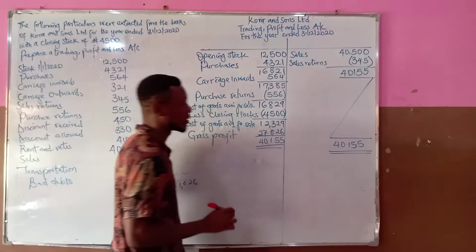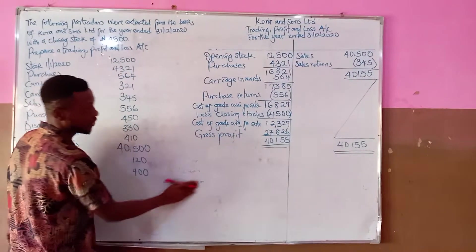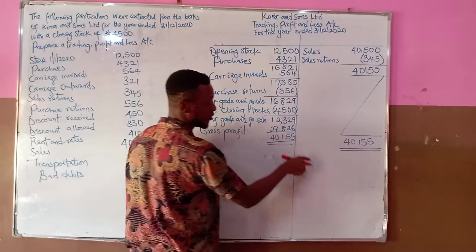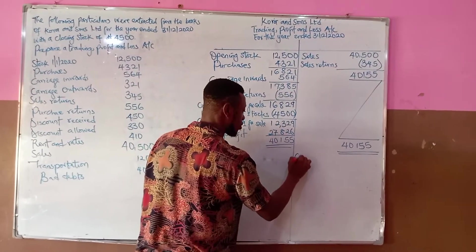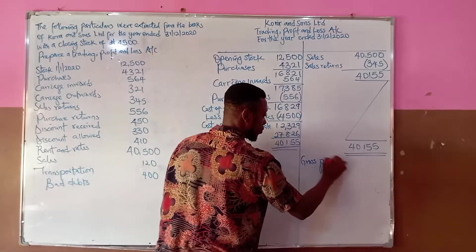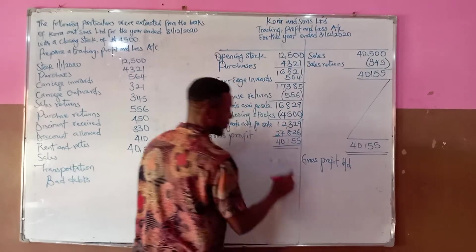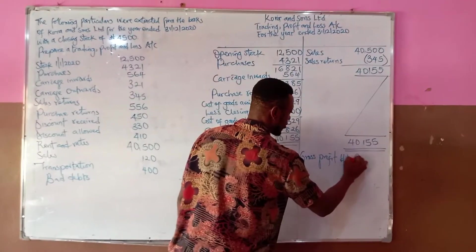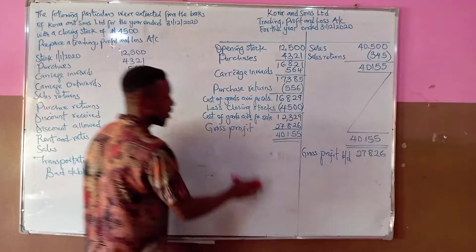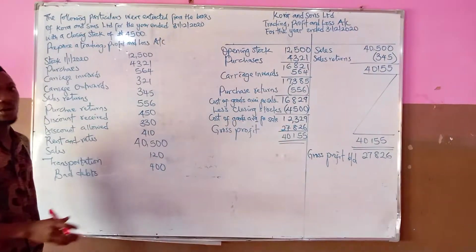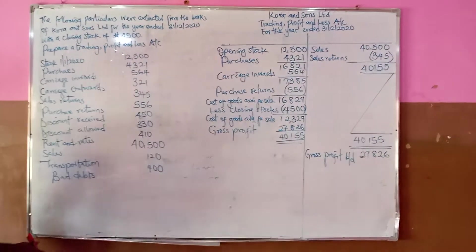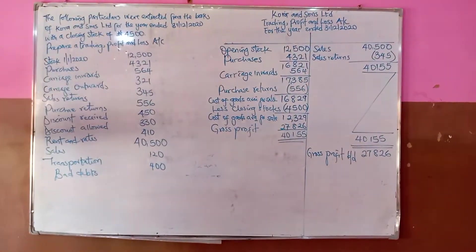We are now done with the trading account and proceed to the profit and loss account. The gross profit of 27,826 is carried over to the credit side of the profit and loss account as 'gross profit brought down'.